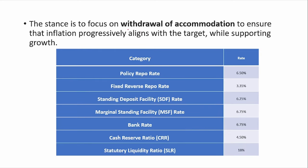The stance is to focus on withdrawal of accommodation. Accommodation stance is when you want to induce money supply into the economy — you increase money supply by reducing the interest rate. Withdrawal of accommodation is a situation where you reduce the money supply in the economy because inflation is high. In order to reduce or control inflation, the withdrawal of accommodation stance has been chosen.